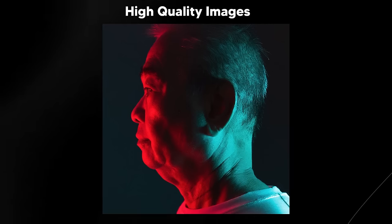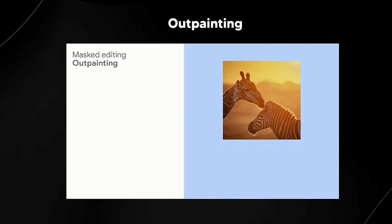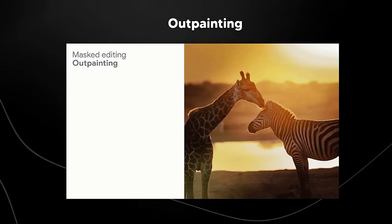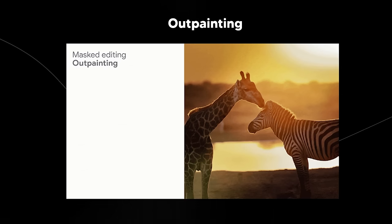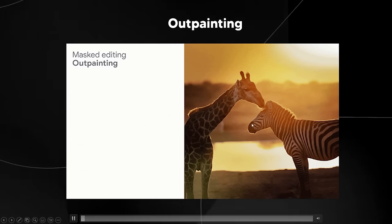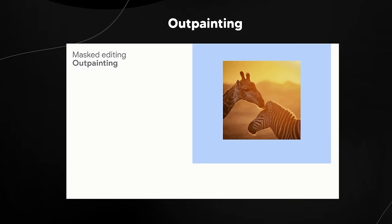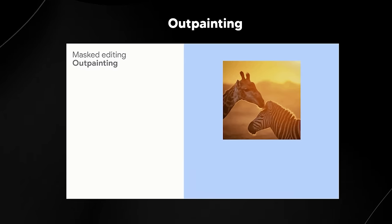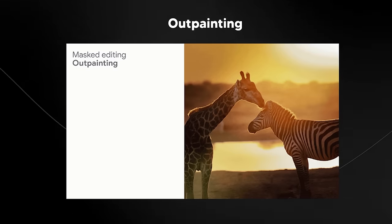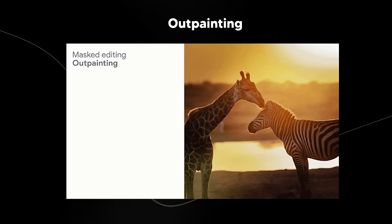Here's a feature you may not have seen: outpainting from Google. They've mentioned outpainting and inpainting before in other Google products. Essentially, outpainting is where you zoom out and increase the size of an image. We did see this in Midjourney, and it's good that we're now getting it from Google as well.